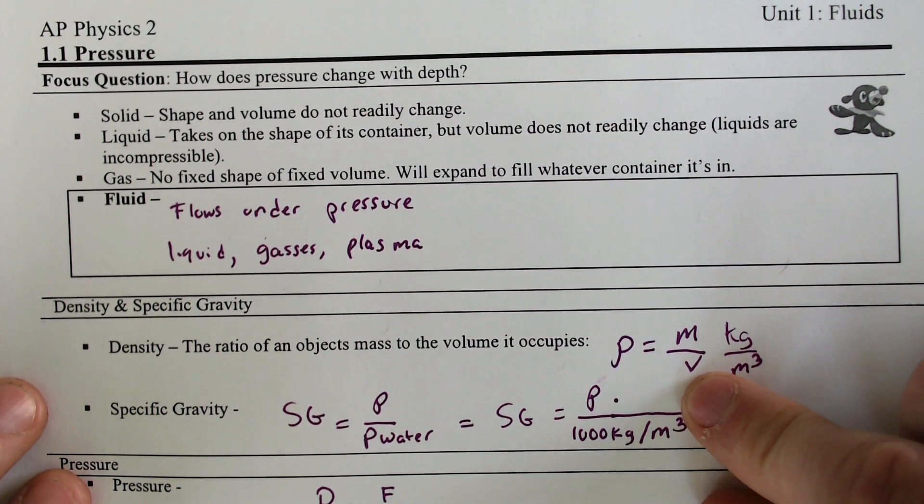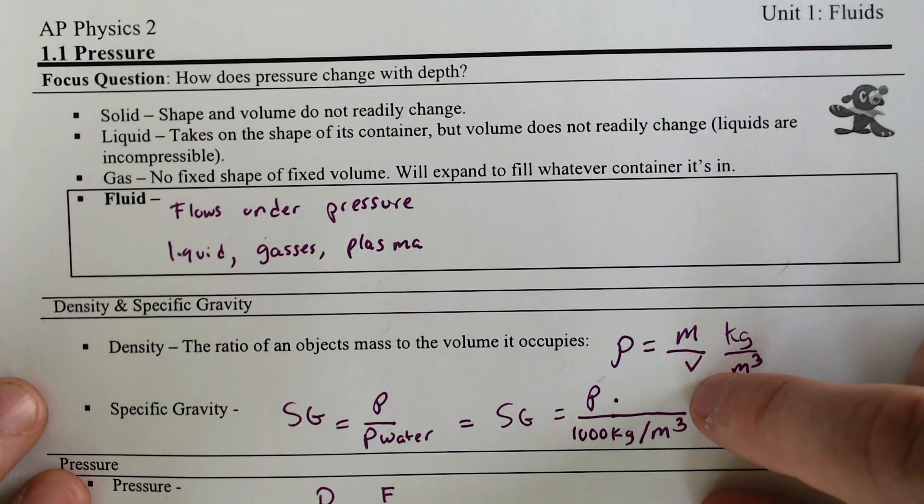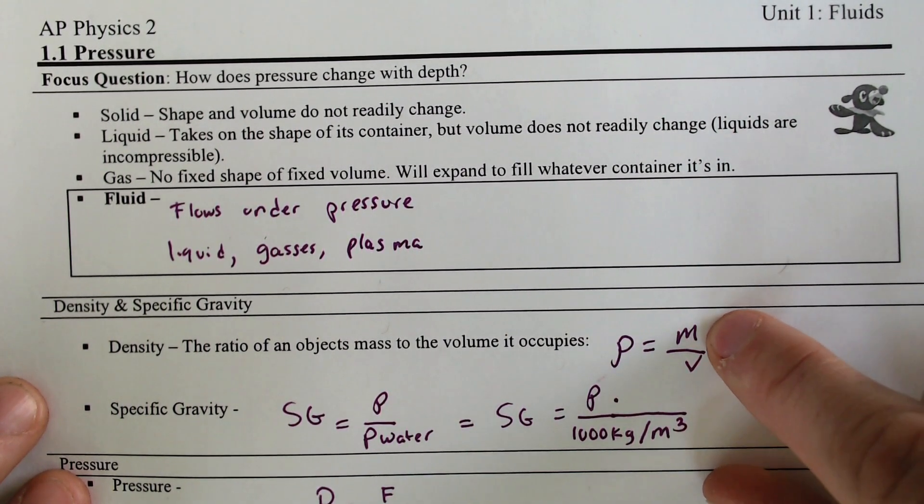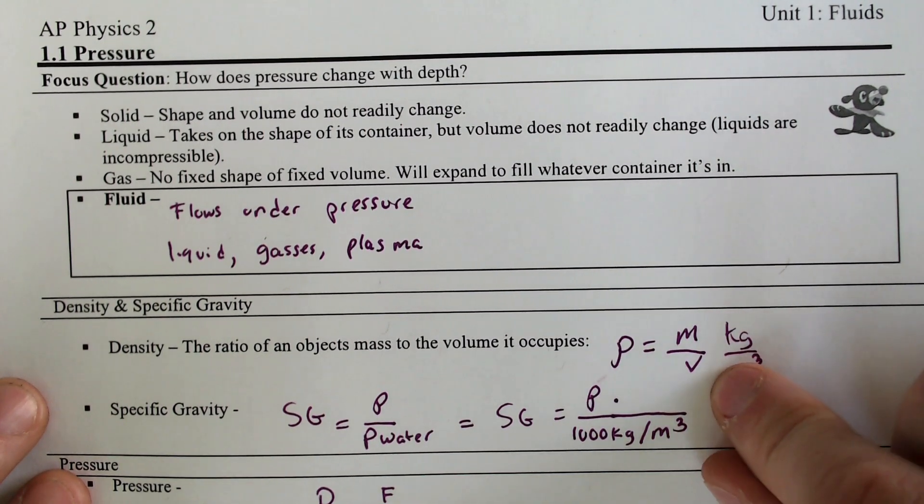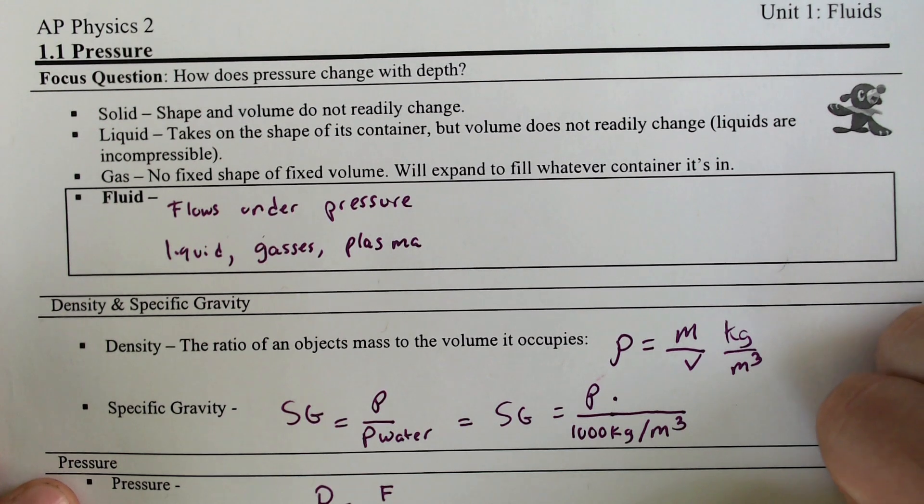But the volume plays a huge role in that. If you have a thousand kilograms of an object, let's say it's a gas, and it occupies a space the size of a continent, it is going to be incredibly light and not very dense. But if you took that same mass and compressed it into a tiny, itty-bitty box, that is going to be the heaviest box you've ever tried to lift.